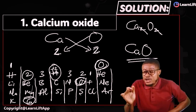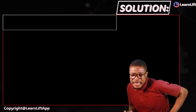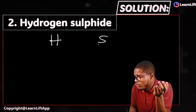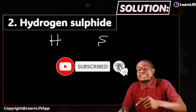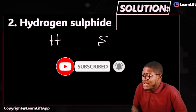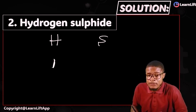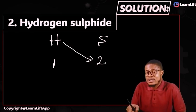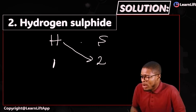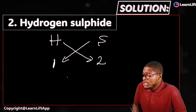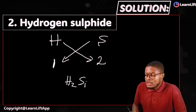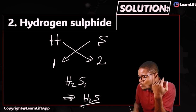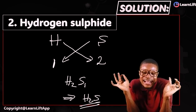Number two: hydrogen sulfide. Write out the elements — hydrogen and sulfur. Valency of hydrogen is one (group one). Valency of sulfur is two (group six — same group as oxygen). Interchange: hydrogen gets valency two, sulfur gets valency one, giving H2S1. You don't need to write the one, so the formula is H2S. That is your hydrogen sulfide. Very easy and direct.